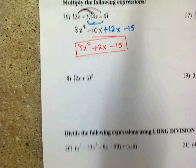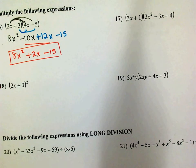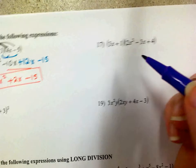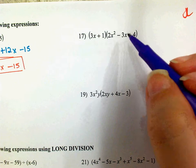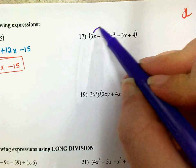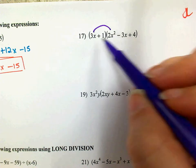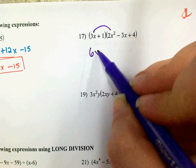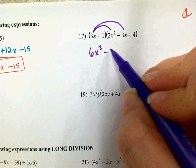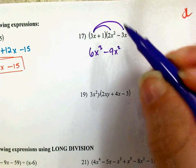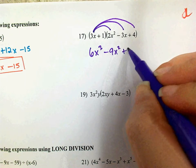On 17, you're supposed to multiply this binomial times this trinomial, which means you're going to distribute these two things to three different terms. First distribute the 3x: 3x times 2x squared is 6x cubed. 3x times negative 3x is negative 9x squared. And 3x times 4 is positive 12x.